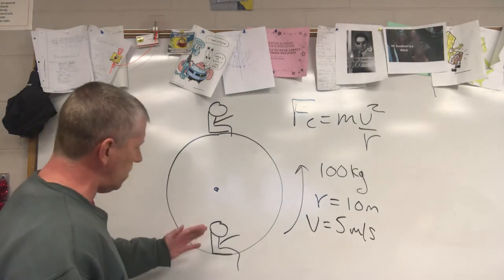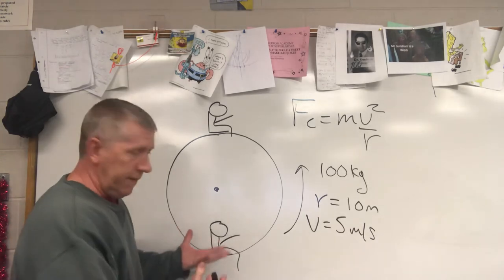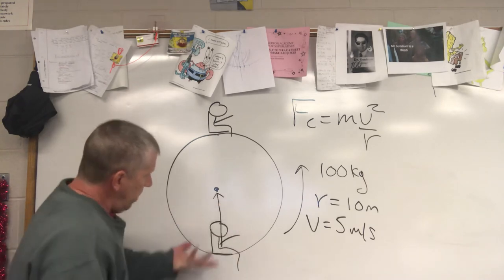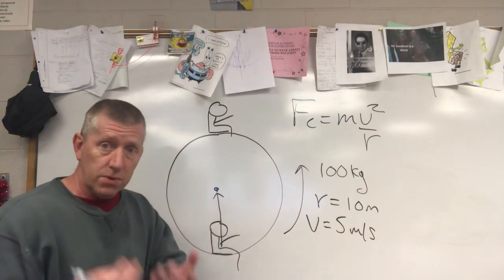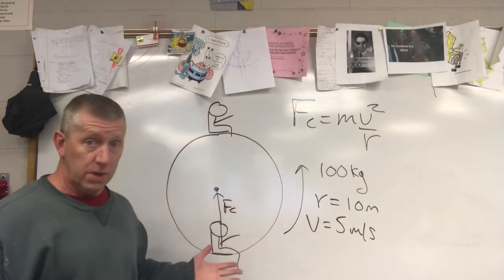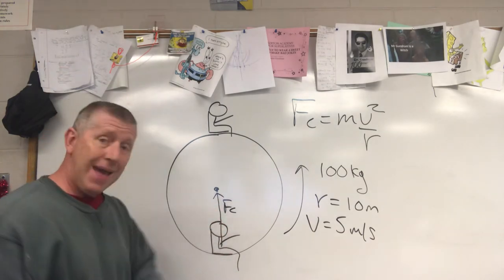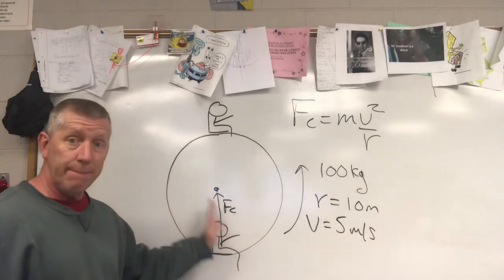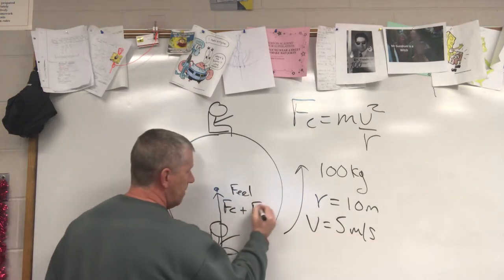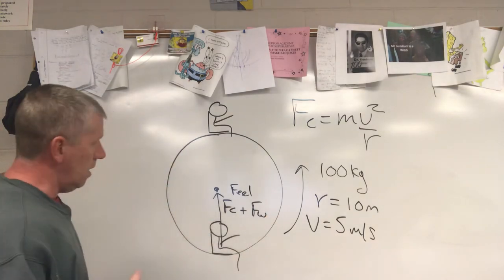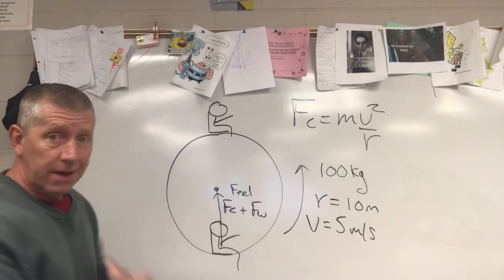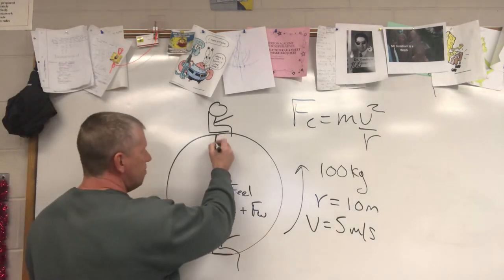At the bottom of the ferris wheel, you feel what you'd normally feel — your weight — but you're also experiencing a centripetal force pulling you toward the center. That's what centripetal force does: it pulls you toward the center. So acting on your body you have FC and you feel the seat pushing up on you. At the bottom, the total force you feel is FC plus FW — that's why you feel heavier, two forces acting on your body at the same time.